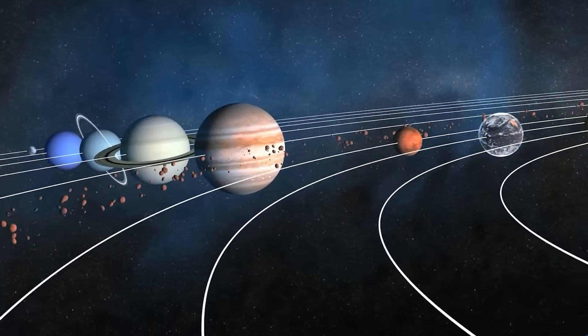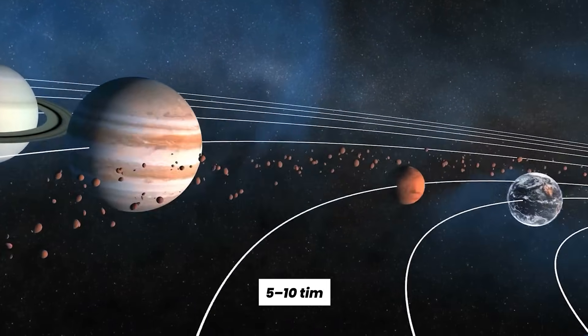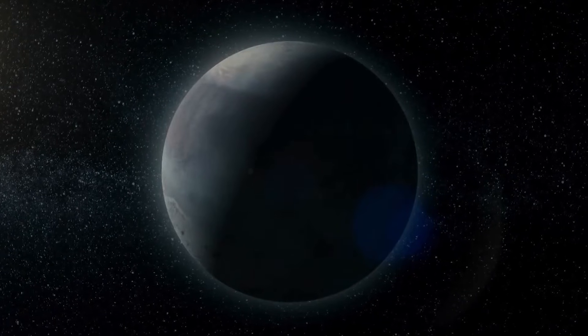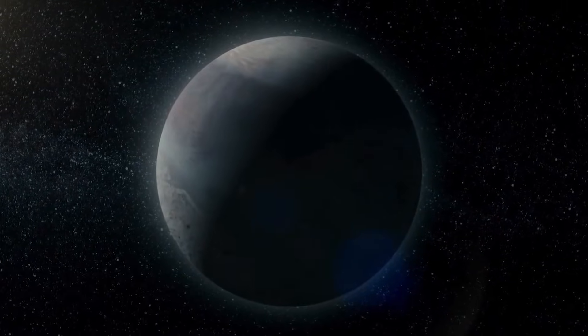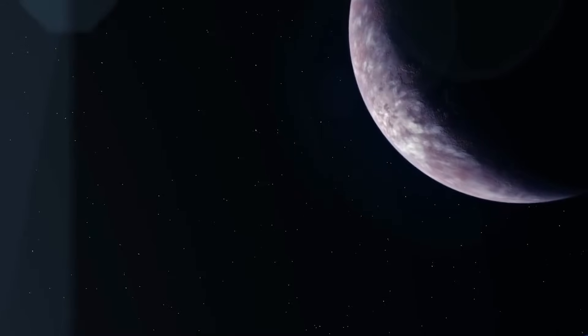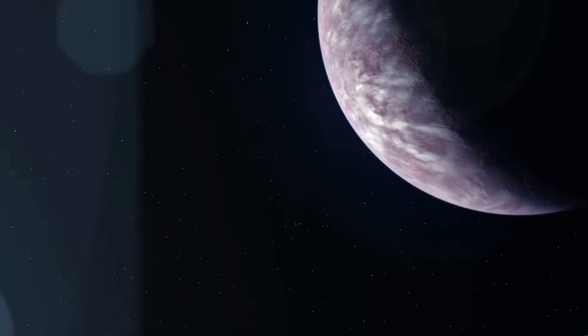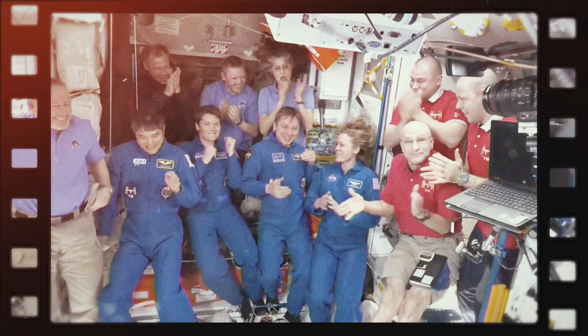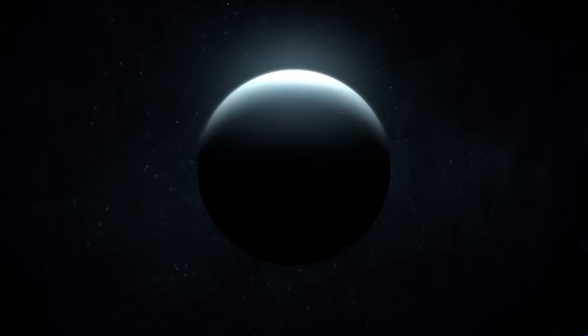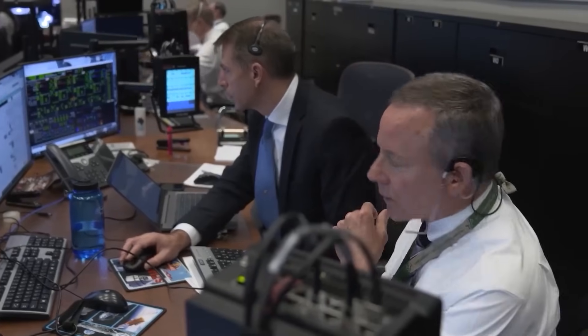The idea of Planet 9 took root in 2016, when astronomers Mike Brown and Konstantin Batygin noticed something odd in the outer solar system. A group of icy bodies, small, distant, and far beyond Neptune, were behaving strangely. Their orbits were clustered, tilted in the same direction, as if something massive was tugging on them from the dark. They ran the numbers. The most elegant solution? A hidden planet, roughly 5 to 10 times the mass of Earth, orbiting far beyond Pluto.